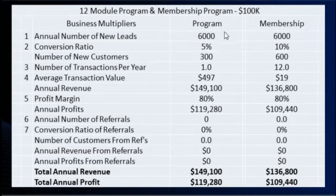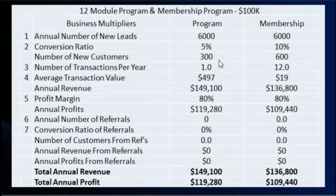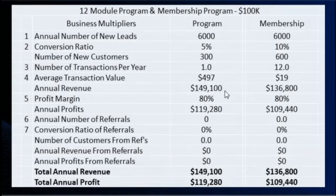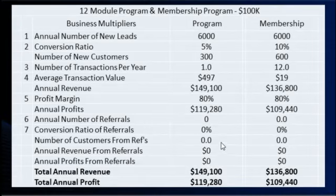If they go through a two- or three-step process and you get at least 5% conversion, that's 300 new customers. If they buy one $497 online program, that's $149,000. At an 80% profit margin — meaning 20 cents of every dollar goes to marketing, admin, or whatever — that's $119,000 in profit. And I haven't even added referrals, whose conversion rates are much much higher. This is just using the first five generators.